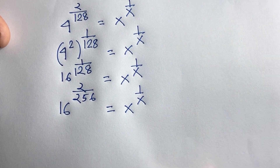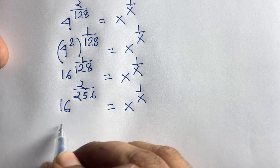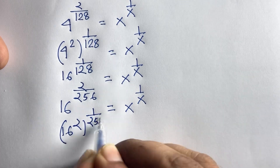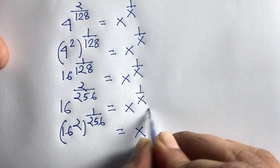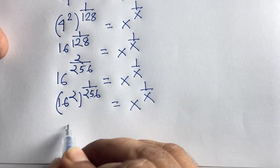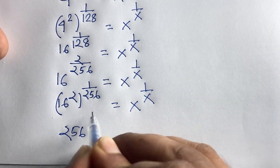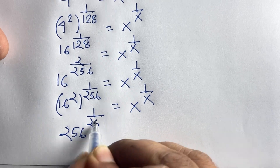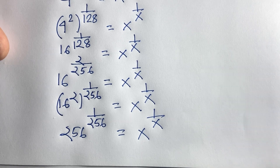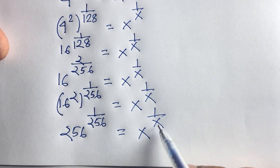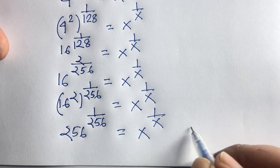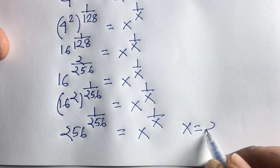16 to the power 2 is 256, so we have 256 to the power 1 over 256 is equal to x to the power 1 over x. Now look — here is x to the power 1 over x, and here is 256 to the power 1 over 256. So I can say easily: x is equal to 256.